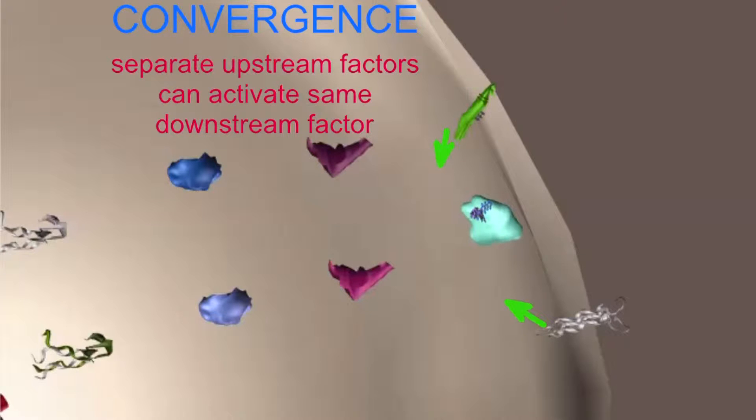During signal transduction, the process of convergence can also be observed, in that a specific enzyme or effector can be activated through the actions of multiple separate pathways.